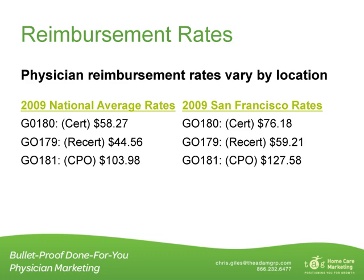Physician reimbursement rates vary depending on location and code. There are 98 different carrier locations across the U.S. Some states have one set of rates for the entire state, while others have different rates according to specific cities. For example, the 2009 national average rates versus the 2009 San Francisco rates — San Francisco's rates are some of the highest in the country. Note that the rates have not changed since 2009; that was the last update and a freeze has been put on them since then.